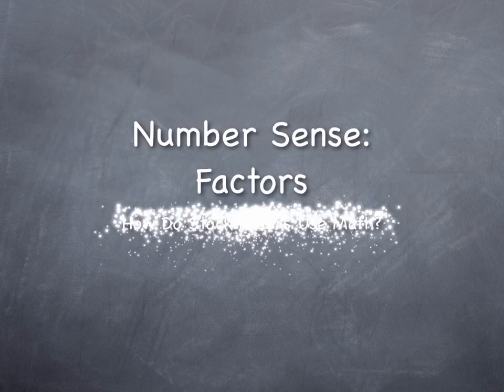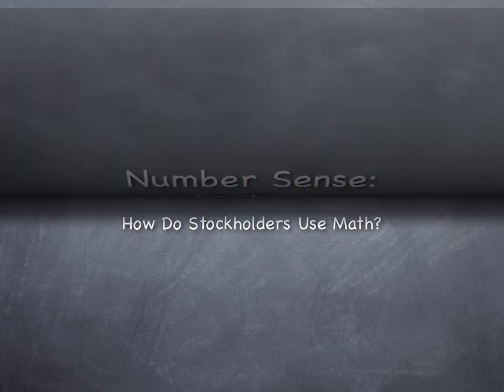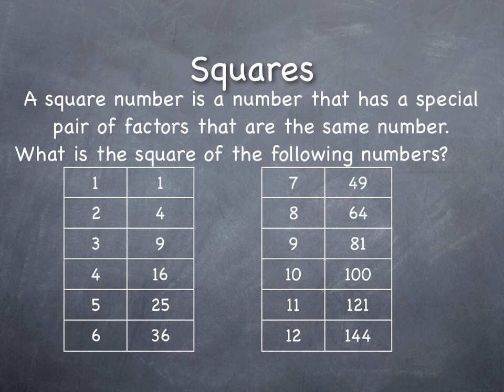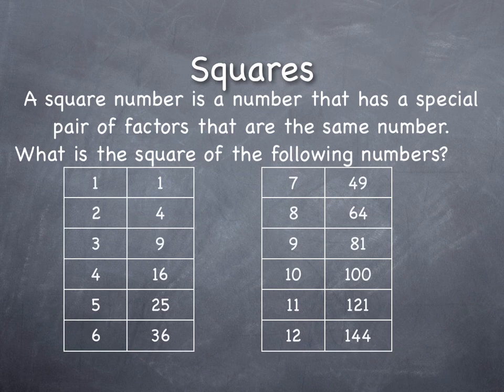We're going to talk more about number sense, and we left off discussing squares. Squares are special numbers that have a pair of factors that are exactly the same. For example, the number 16 is special because it has the factor 4 times 4, or 4 squared, making it the answer to squaring a number.